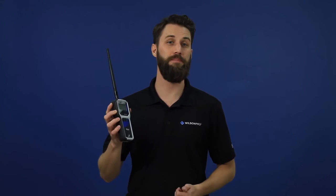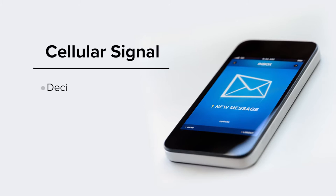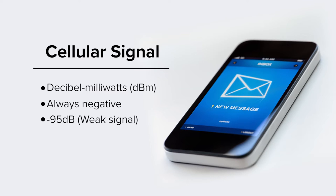So now that I've convinced you why using a signal meter is more reliable when testing cell signal strength, what do these readings actually mean? Cellular signal is measured in decibel milliwatts, or dBm, and will always be displayed as a negative number. It ranges from about -95 dB, being very weak signal, to -40 dB, which is incredibly strong signal, as if you were standing next to a cell tower.